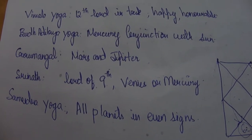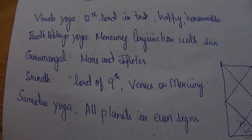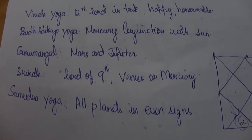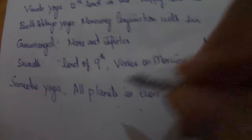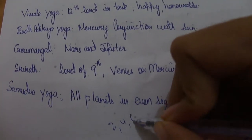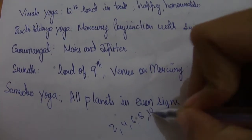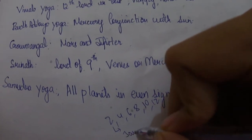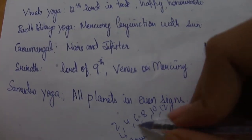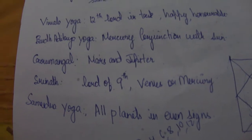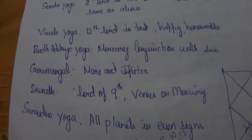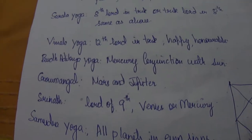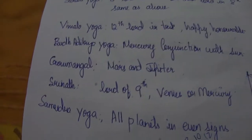There is another yoga known as Samudra Yoga, in which all the planets are present in even signs — sign numbers 2, 4, 6, 8, 10, and 12 (for example, sign 2 is Taurus). If all the planets are present in even signs, that forms the Samudra Yoga, which is also considered very fortunate. These are the various popular yogas, with many more combinations that exist.